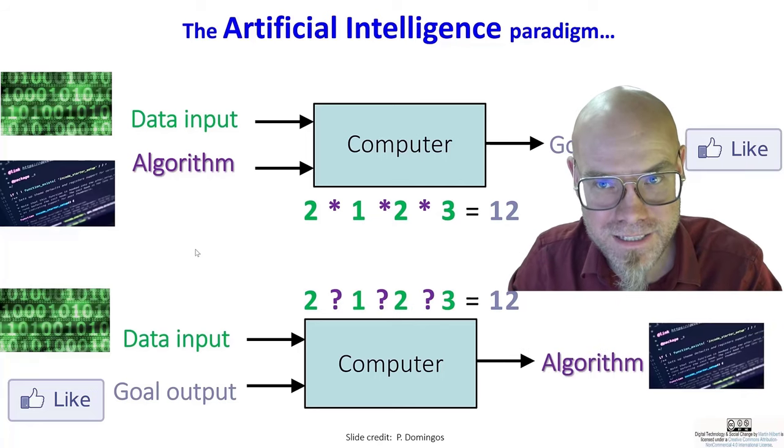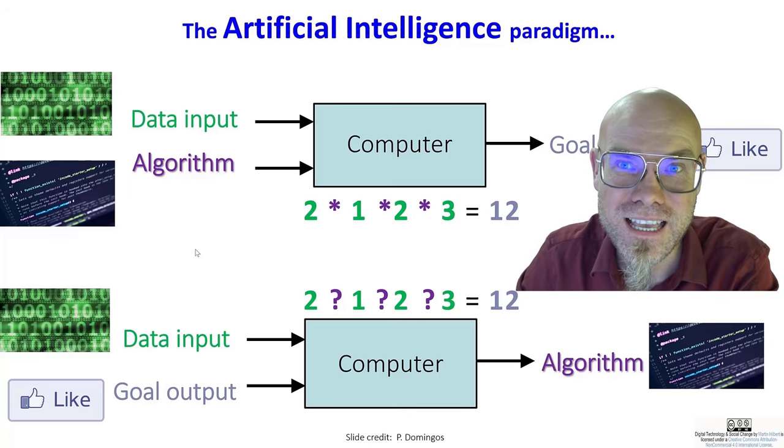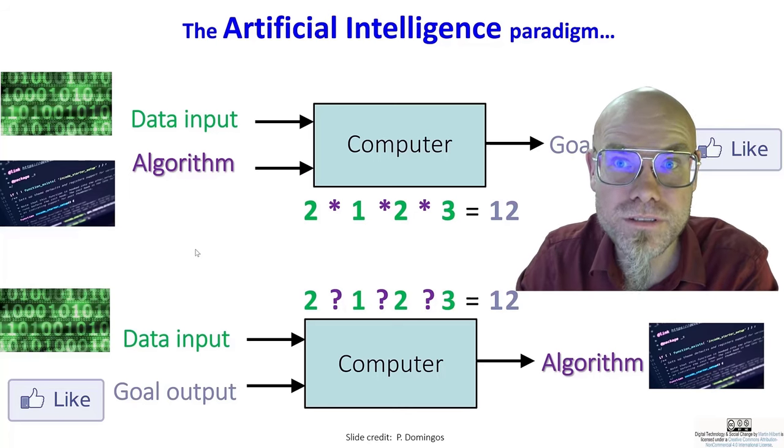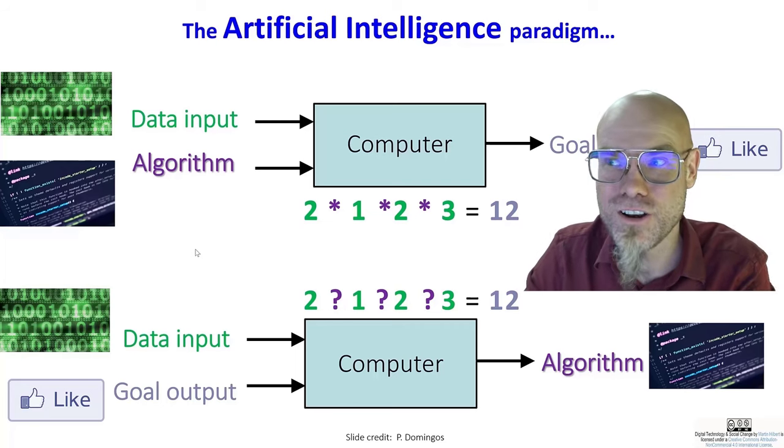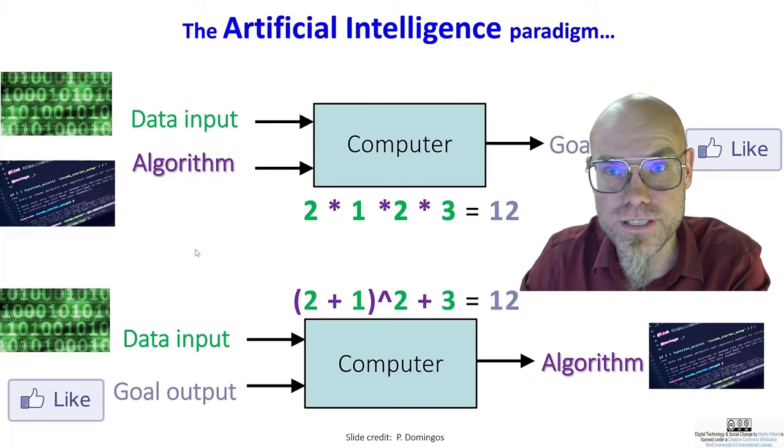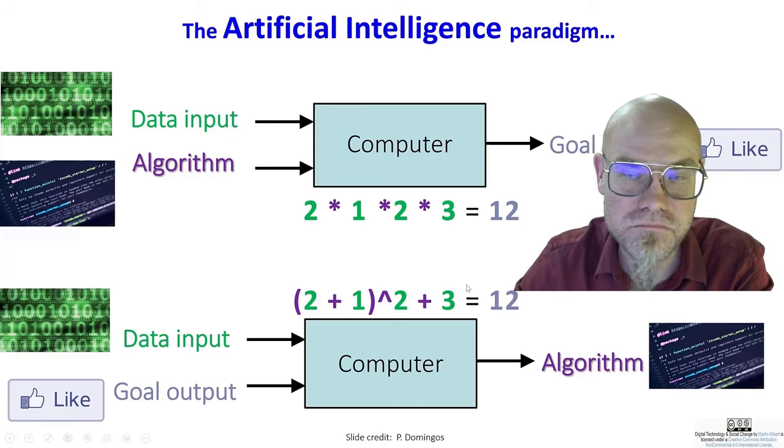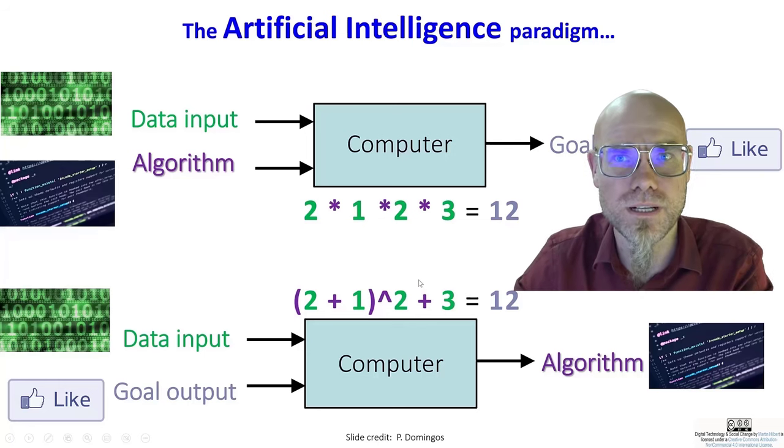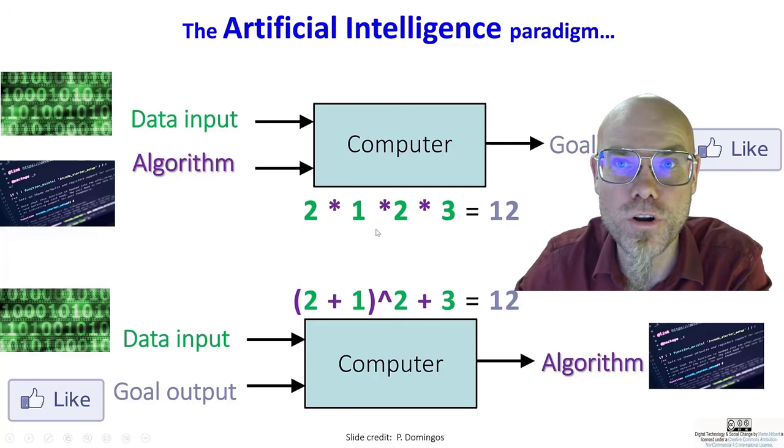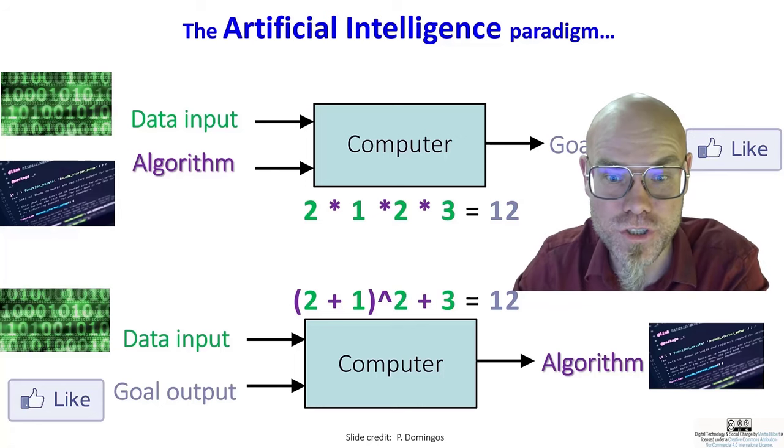And then the master algorithm. That's what Pedro Domingos calls it. The master algorithm computes the best algorithm. So machine learning is the master algorithm that computes the best algorithm. And there can be different ways that lead to the same result. You could compute it this way here, or you compute it this way here. And what's the better one? That's in the eye of the beholder. And you might choose, or you can ask the machine to choose for you as you wish.